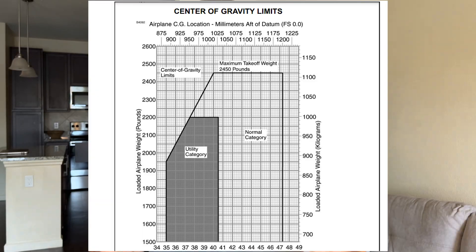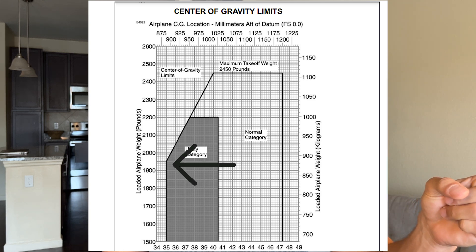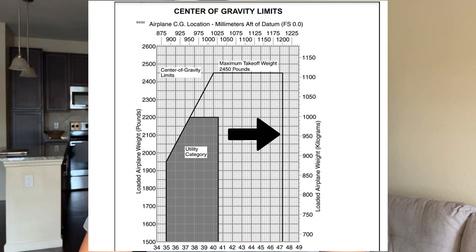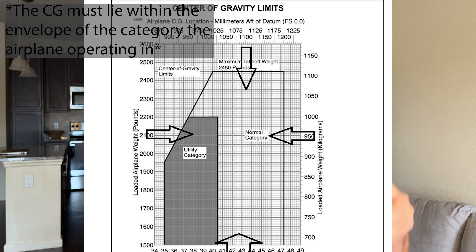Here is an example from the Cessna 172 CG envelope. We have two lines: this line is the forward limit depending on your weight, and there is another line which is the aft limit. The more you move weight toward the back of the airplane — say, putting bags in the rear compartment — the more your CG shifts toward the aft limit. The opposite is also true: moving weight forward shifts the CG toward the forward limit. As long as the CG lies inside the envelope, you should be good to go.